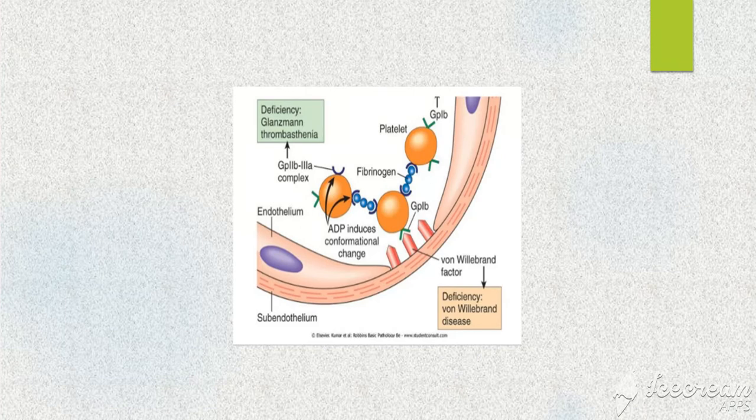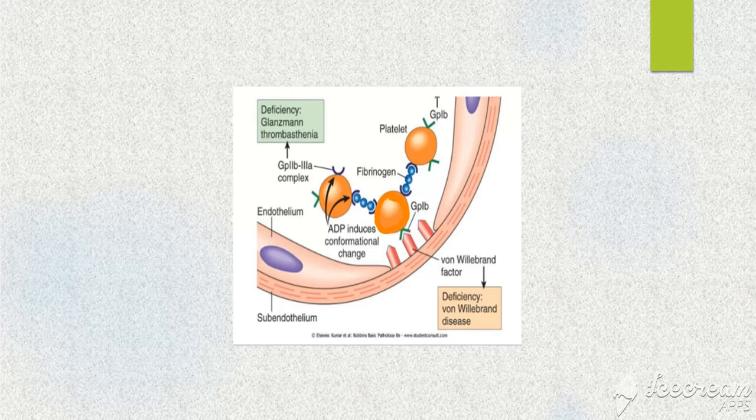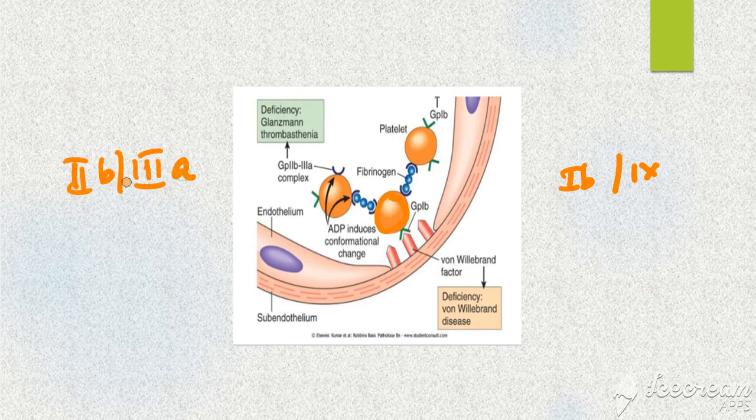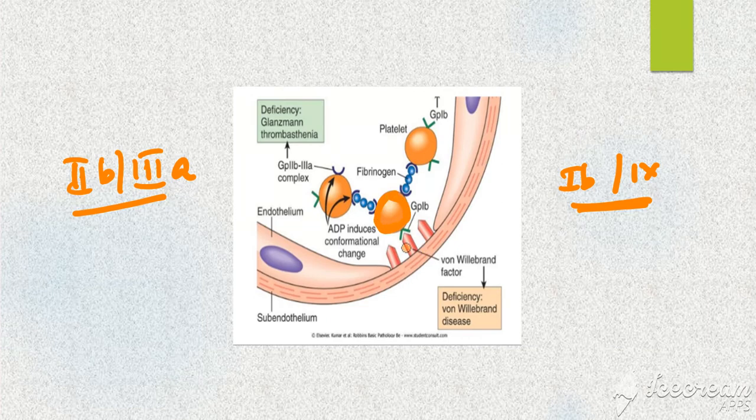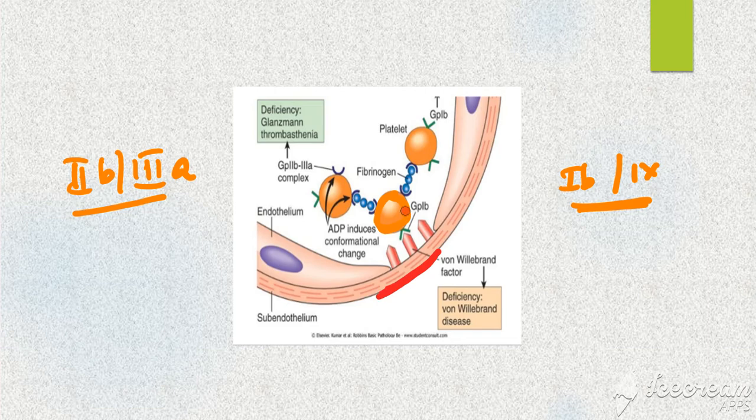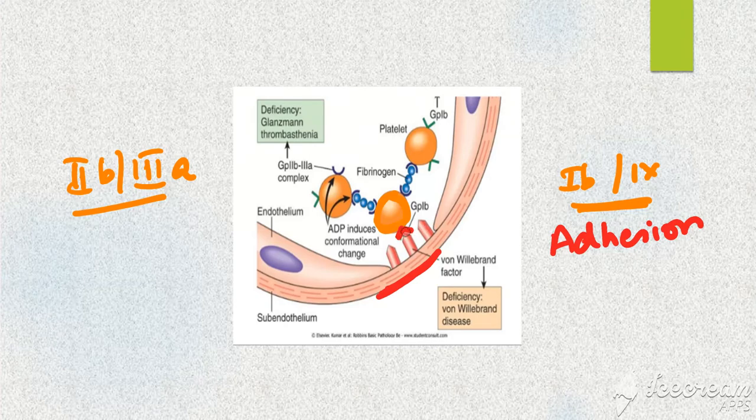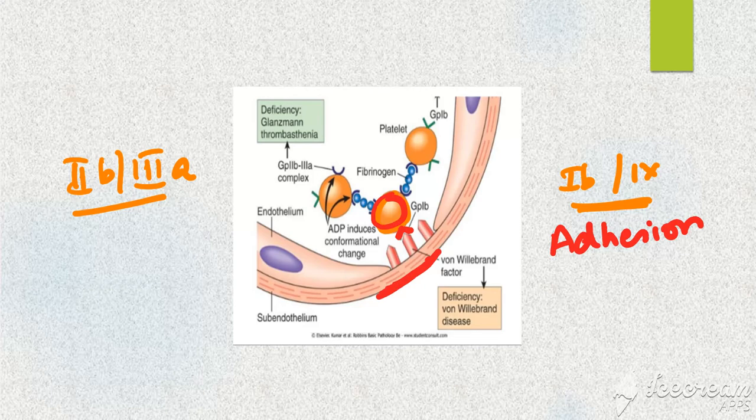For this, you should know the function of platelet and how it helps in hemostasis. Your platelet has got two receptors: glycoprotein 1b9 and 2b3a. What is the function of 1b9? Your platelet has to adhere to the subendothelial collagen. This receptor helps in adhesion of the platelet to the subendothelial collagen through the help of von Willebrand factor.